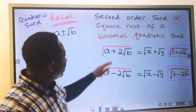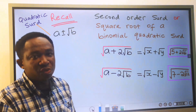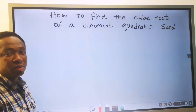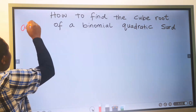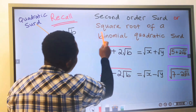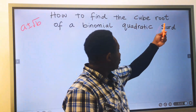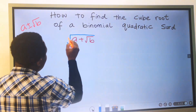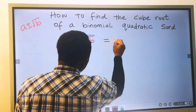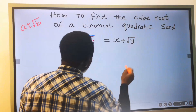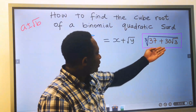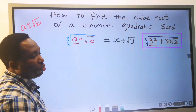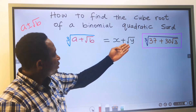This applies when dealing with the square root of a binomial quadratic surd. But for the cube root of a binomial quadratic surd, the conditions are different. Consider a quadratic surd in the form of a plus or minus the square root of b, but instead of a square root, we are going to be taking the cube root. For a plus the square root of b, all cube root, our answer will be represented in the form of x plus the square root of y. Here the first term, which is a, has no square root, and x in our answer also has no square root on it.